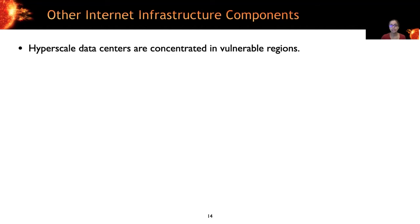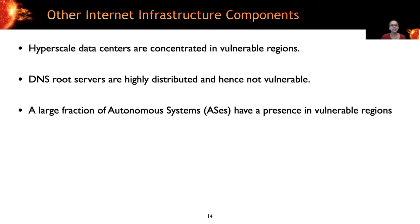I also looked at other internet infrastructure components. So hyperscale data centers are concentrated in vulnerable regions. So while data centers don't suffer direct damages, access to these data centers can be affected when submarine cables fail. DNS root servers are highly distributed and hence they'll remain reachable even under high network partitioning caused by submarine cable failures. However, location data on top-level domain servers and other authoritative servers was not available and they were not analyzed. So we don't know the end-to-end picture. And when we analyze autonomous systems, we see that a large fraction of ASes have a presence in vulnerable regions. But the vast majority of them have a very small spread. So these are some of the observations.